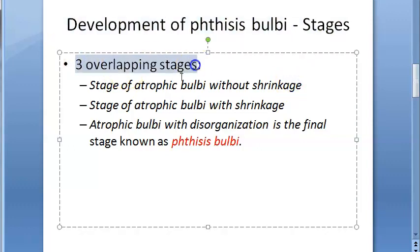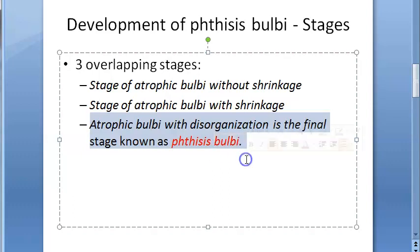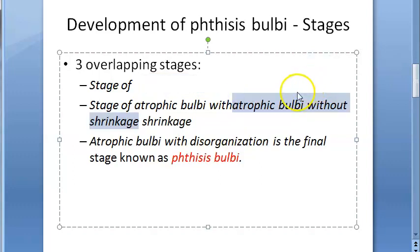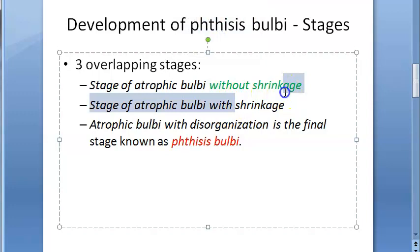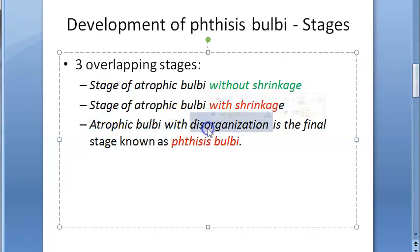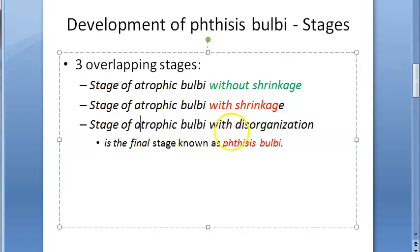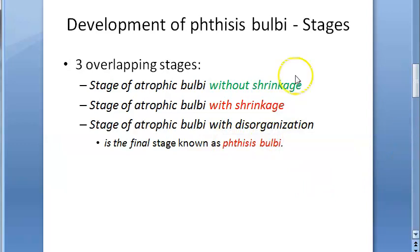In the stages of development of phthisis bulbi, there are three overlapping stages. The last stage — atrophic bulbi with disorganization — is what is actually called phthisis bulbi. The three stages are: atrophic bulbi without shrinkage, atrophic bulbi with shrinkage, and atrophic bulbi with disorganization. We will go through each of these stages in detail.